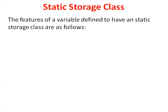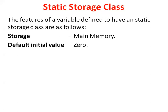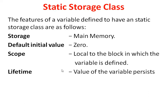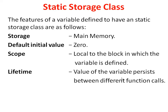Features of a variable defined to have static storage class are as follows. Storage will be in main memory. Default initial value is 0 — that means if you don't initialize, the static variable will be initialized to 0 by default. Scope is local to the block in which the variable is defined. Lifetime: the value of the variable persists between different function calls, meaning the variable persists in memory even if the control leaves the function. That is called persistence.